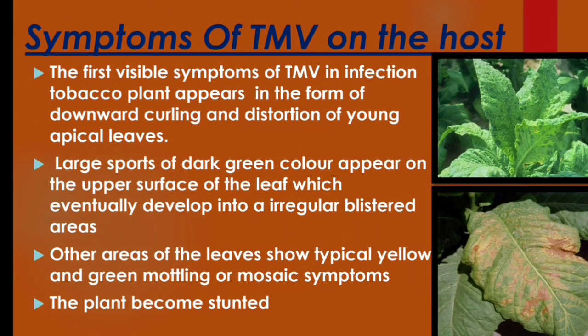Next are the symptoms of TMV. The first visible symptoms of TMV infection in tobacco plants appear as downward curling and distortion of young apical leaves. Large spots of dark green color appear on the upper surface of the leaves, which eventually develop into irregularly shaped areas. Other areas of the leaves show typical yellow and green mottling and mosaic symptoms; in some leaves, brown patches are also found. The plant's growth becomes stunted.